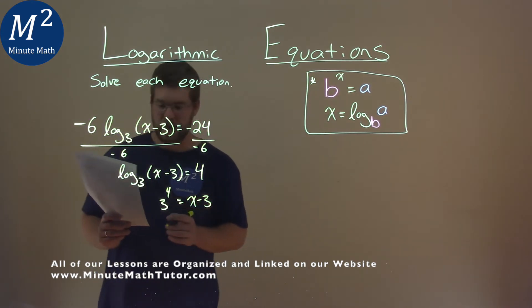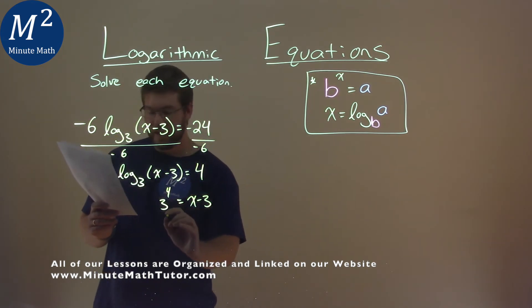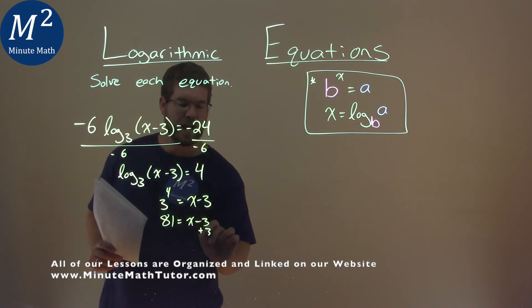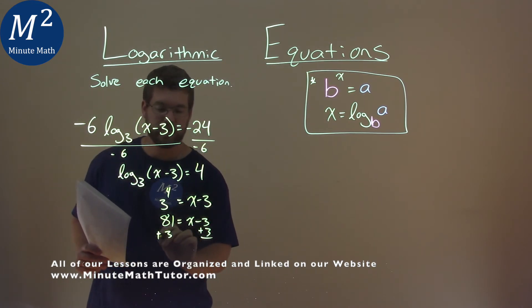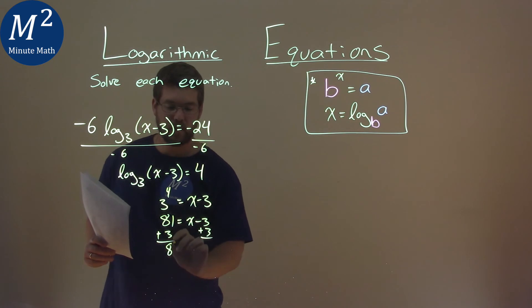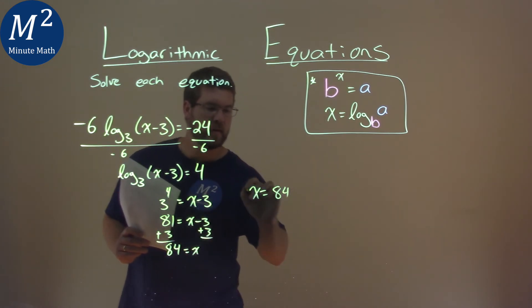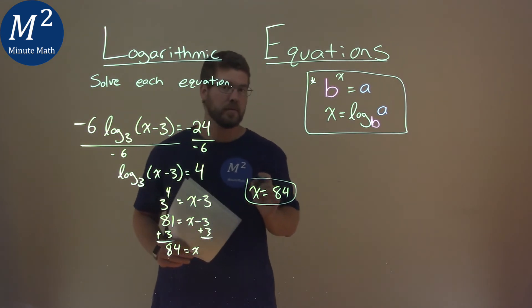Now we need to solve for x. 3 to the fourth power is 81, and that's equal to x minus 3. Add 3 to both sides, and it's pretty easy. 81 plus 3 is 84. So our final answer here is just x equals 84.